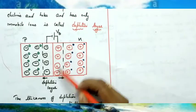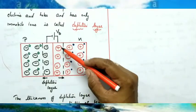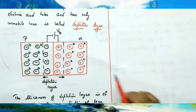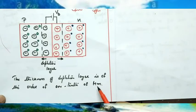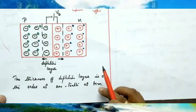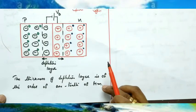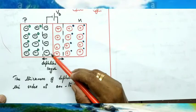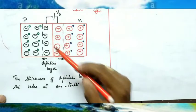This is the depletion layer. In the P region near the junction there is a net negative charge; in the N region there is a net positive charge. The thickness of the depletion layer is of the order of one-tenth of a micrometer — that is 10⁻⁶ meters — which is very, very small. It is called the depletion layer because it is depleted of any free electrons and holes; there are only immobile ions in the region.